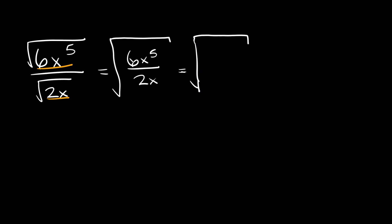So 6 over 2, or 6 divided by 2, is equal to 3. And then x to the fifth divided by x — we have five x's on top and one x on the bottom. That single x on the bottom is going to cancel one of the x's on top, so we're left with x to the fourth. So we're left with the square root of 3x to the fourth.